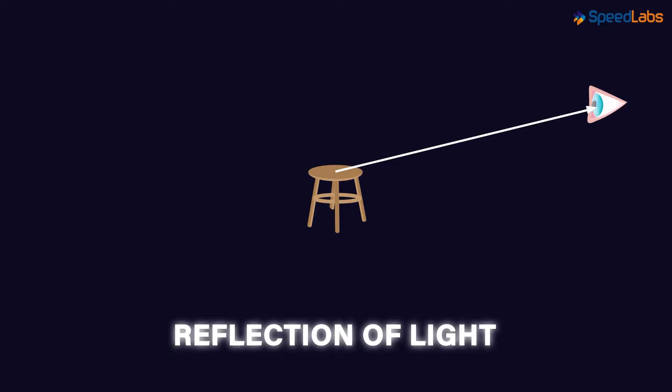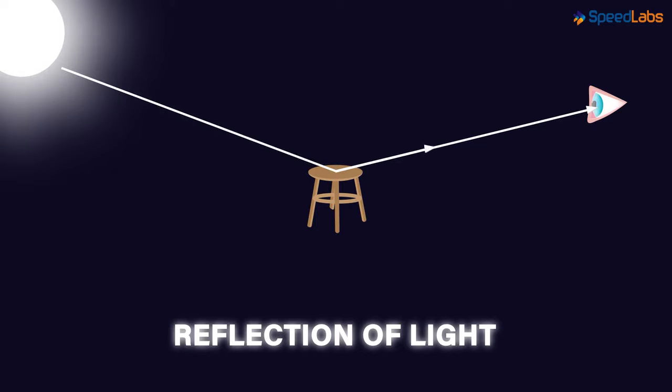This light is nothing but the light coming from the luminous objects. So how can we summarize this? We are able to see non-luminous objects because they reflect the light of the luminous objects falling on these surfaces. Let me repeat.